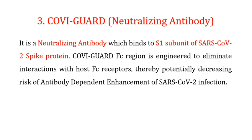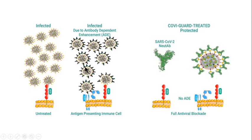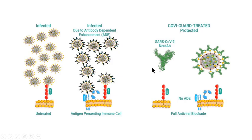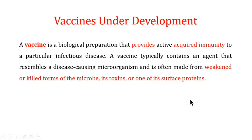All three antibodies are still in clinical trials, but the results in the lab are very promising and may offer a treatment for COVID-19 infection in the near future. COVI-GUARD works by interacting with the S1 subunit of the spike proteins, preventing the virus from interacting with the ACE2 receptor, providing full antiviral blockade and no antibody dependent enhancement of disease.